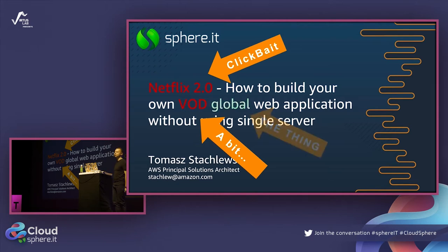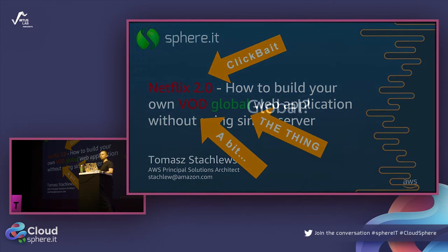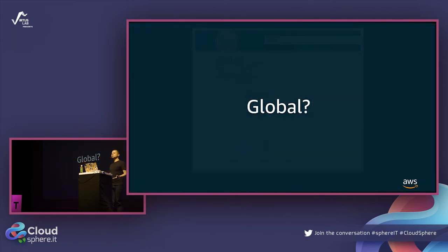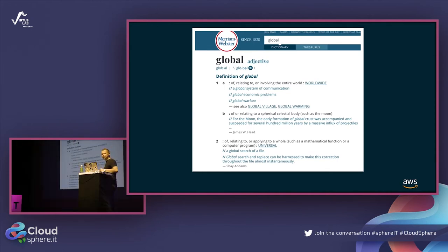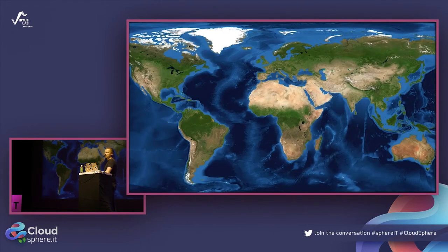The keyword at the start is 'global'. So why global? What does it mean? If you look at the dictionary, global means involving the entire world - big, huge, and so on. So global, regarding IT systems and application systems, means things like this.